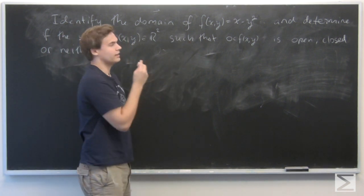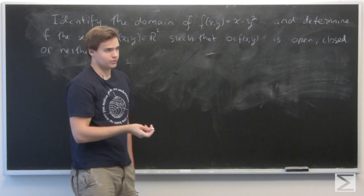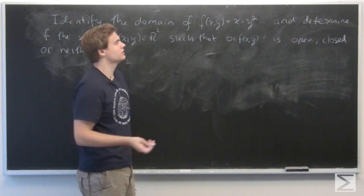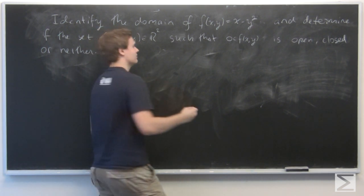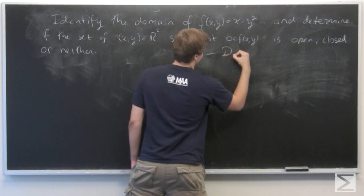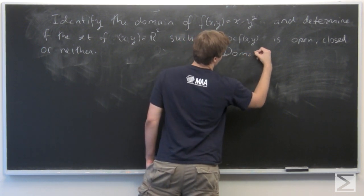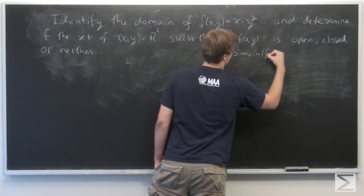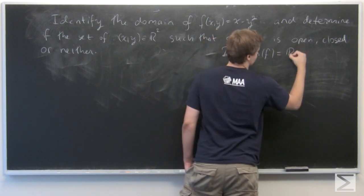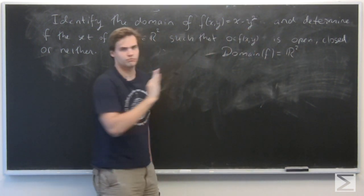Okay, so first we realize that f is a polynomial in two variables, and polynomials are continuous functions. So we have then that the domain of f is just R². It's defined everywhere.